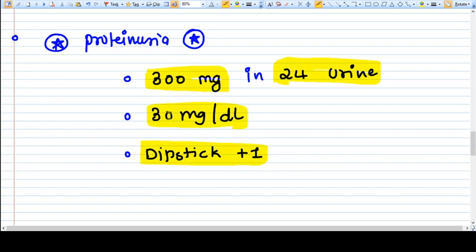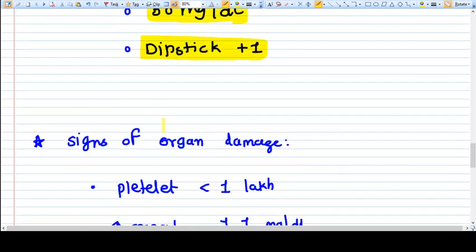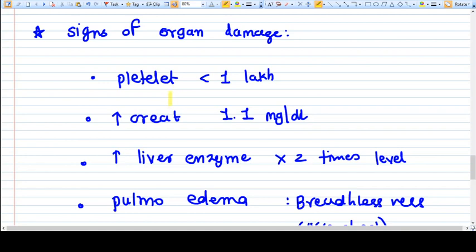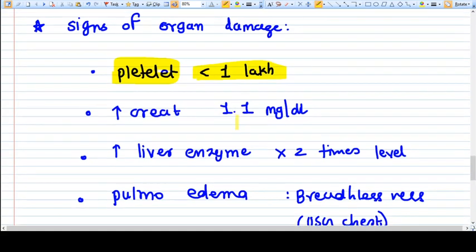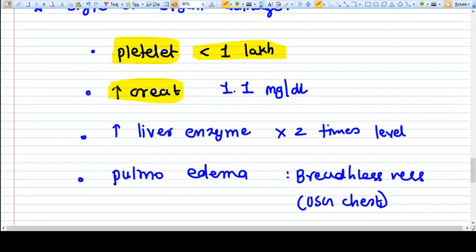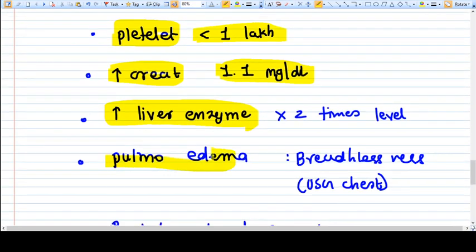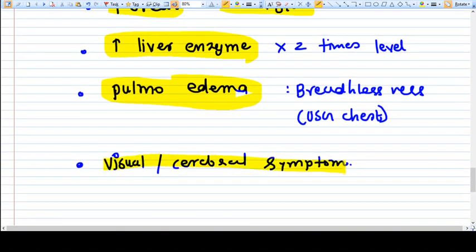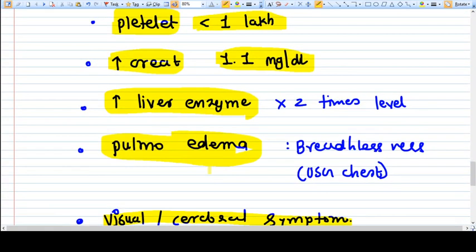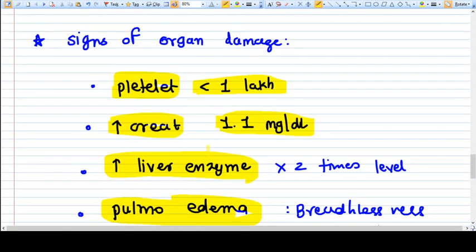When we say signs of end organ damage, that is platelet counts less than one lakh, creatinine increase 1.1 mg per dl, liver enzymes doubles the normal value, pulmonary edema with symptoms, visual or cerebral symptoms. You see the whole system is getting involved with each and every sign of organ damage.